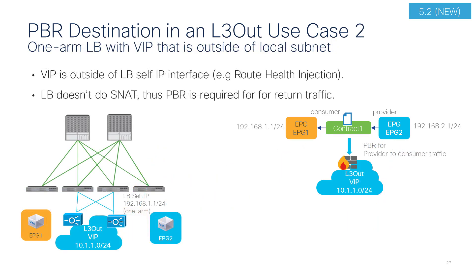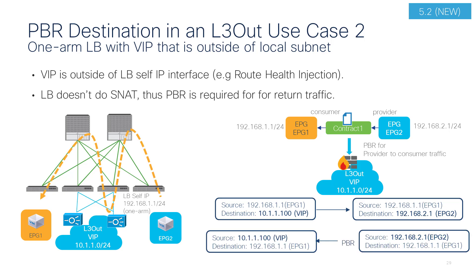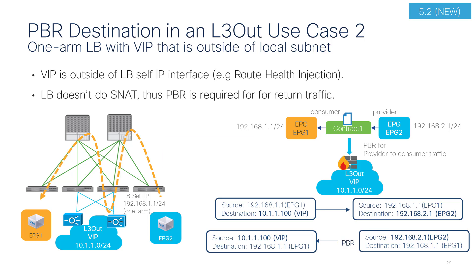The second use case is a one-arm mode load balancer connected through L3 out. As mentioned previously, traffic destined to VIP doesn't require PBR. For return traffic, PBR is required if the load balancer doesn't use source NAT. If the load balancer has another interface in a bridge domain, we can enable PBR for return traffic on that interface. However, if the load balancer has just one interface, PBR destination needs to be in an L3 out.